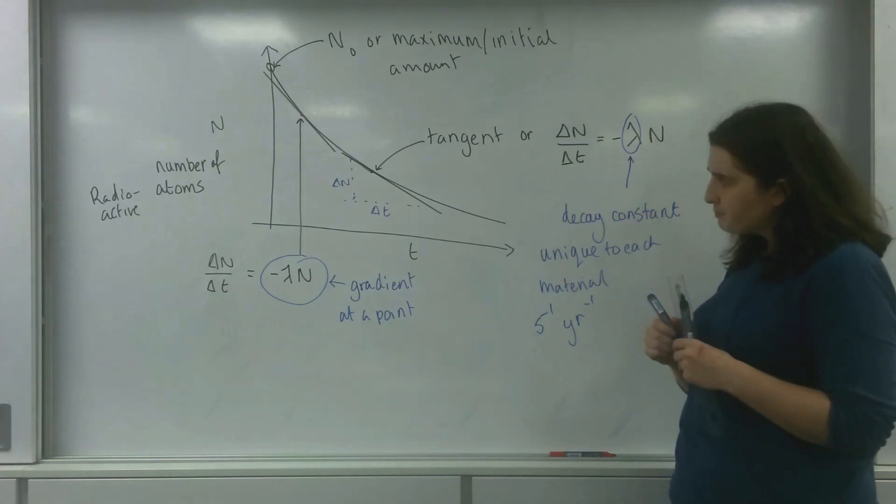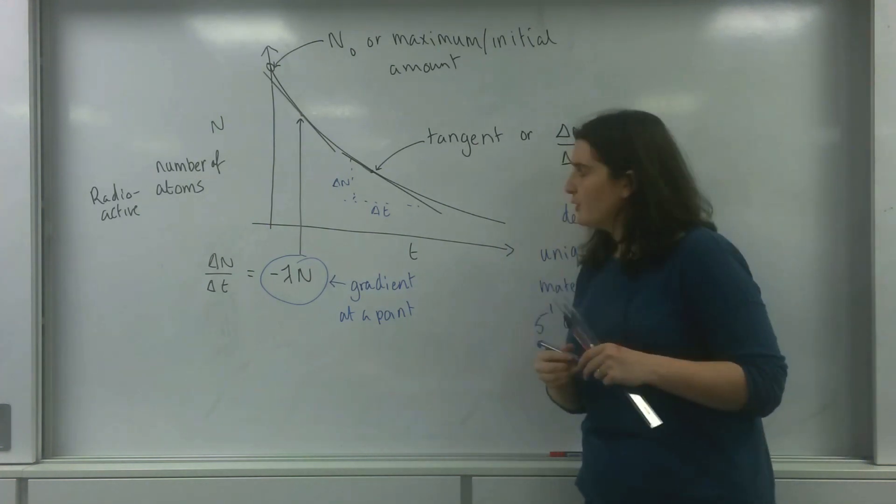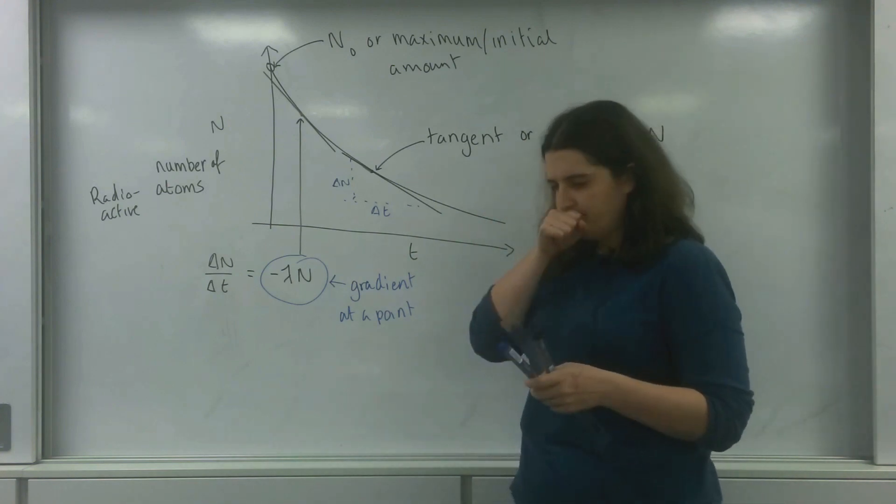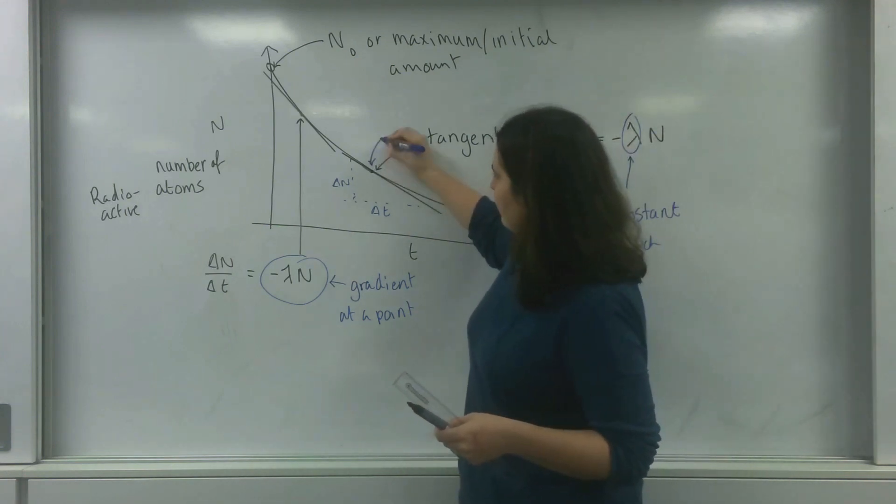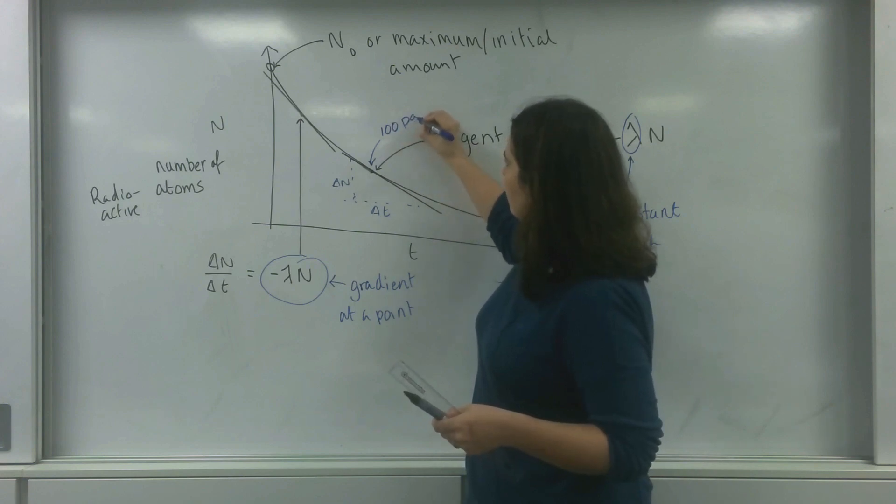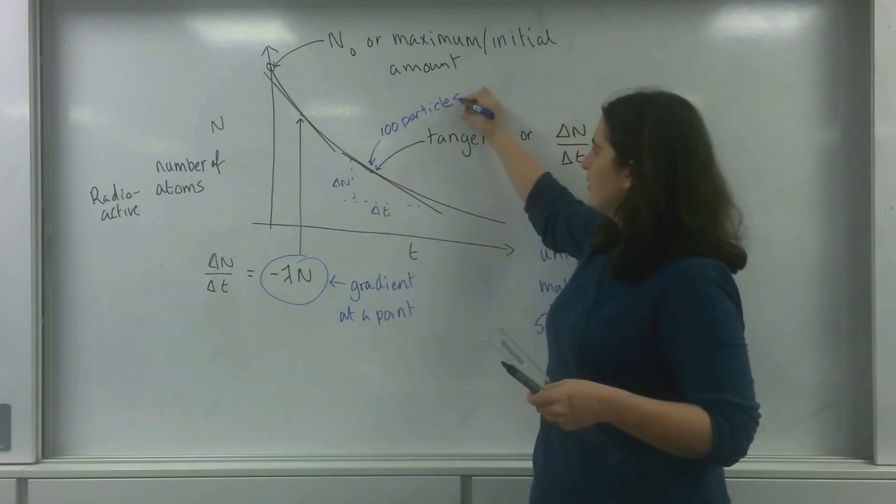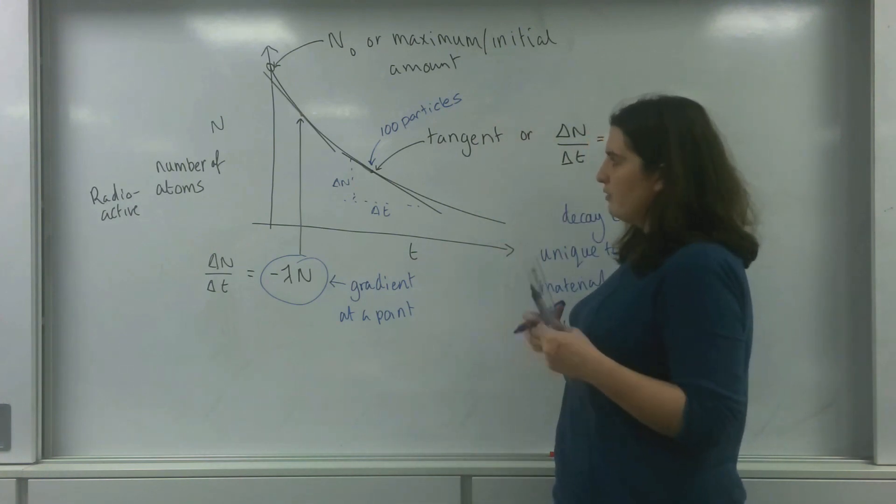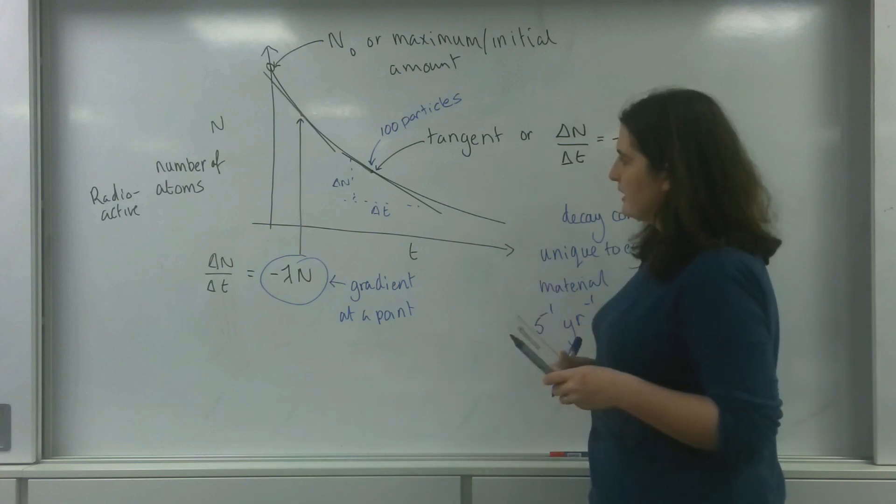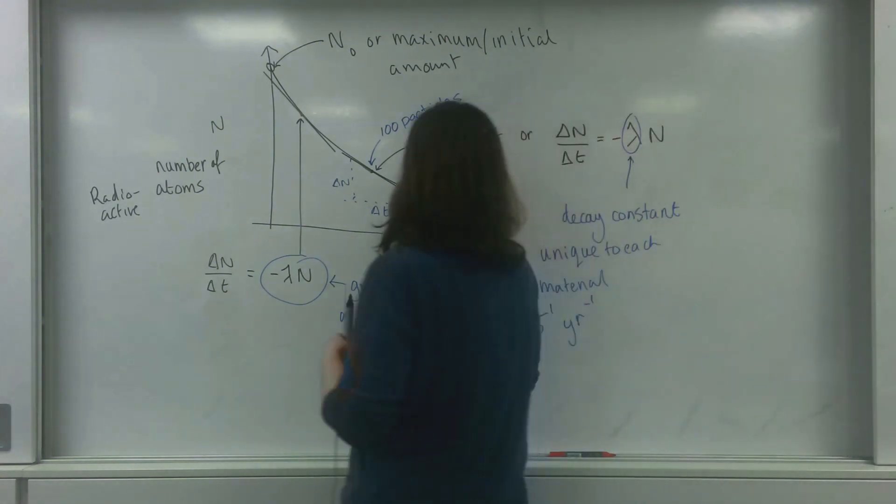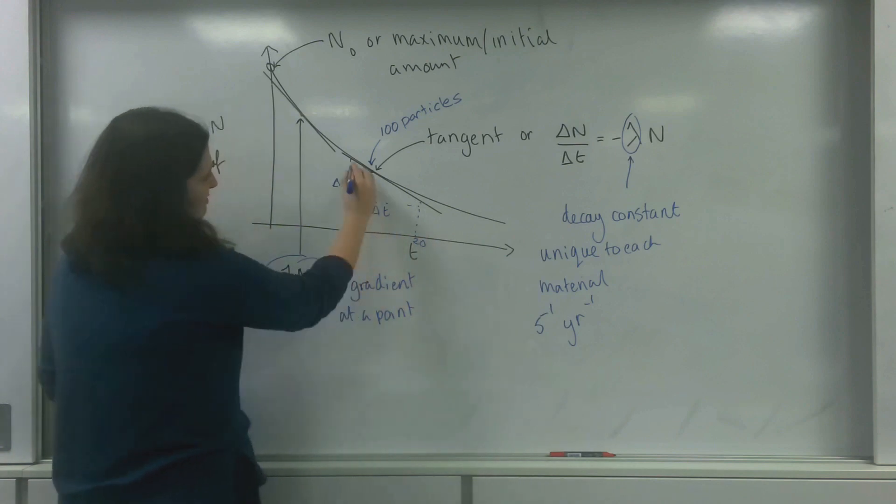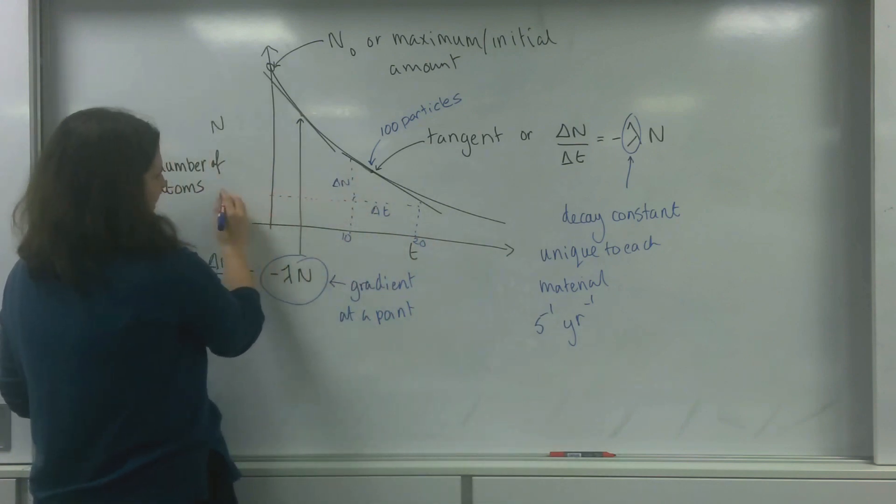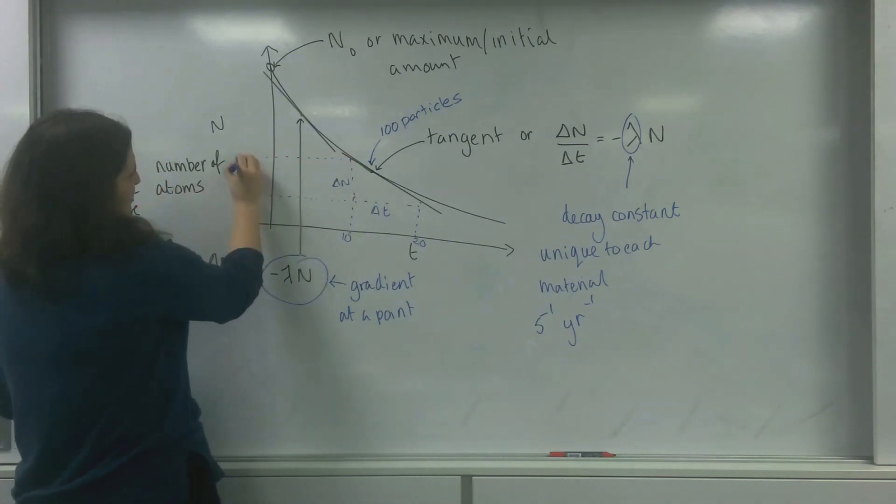So we can take an example here. Let's say at this point I had 100 particles. I could work out my gradient. Let me give some values to this: 10, that's 10, that's 20, that is 50, that is 125. So I'm going to work out my gradient here for this point.